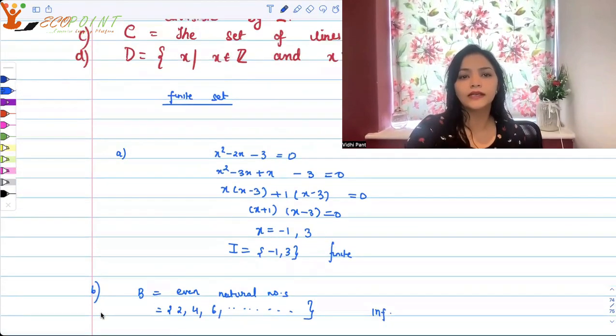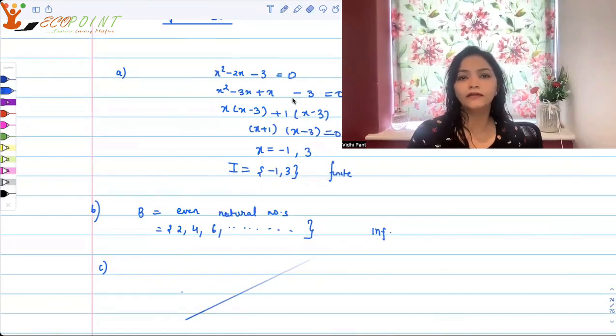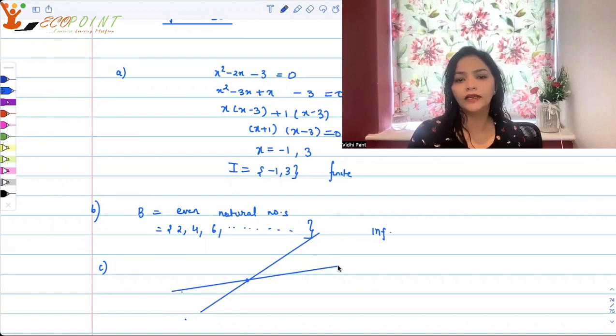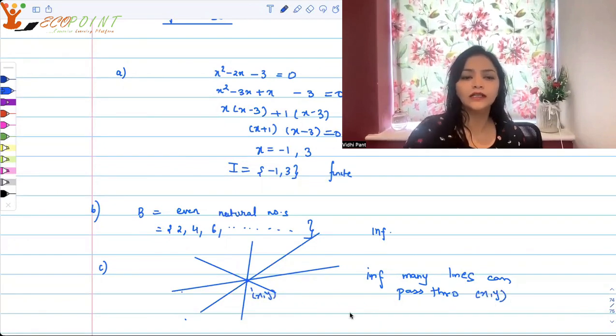C is the set of lines passing through a point. So if you have any particular point, you can yourself see that there could be infinitely many lines passing through this point. Infinitely many lines can pass through this point. So this is an infinite set.